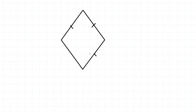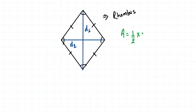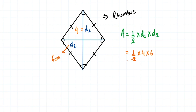Now, what if the four sides are equal but the angles are not 90 degrees? Then we call this quadrilateral a rhombus. To find the area of a rhombus, we need both diagonals. Let's call them D1 and D2. The formula is 1/2 times D1 times D2. For example, if D1 is 4 centimeters and D2 is 6 centimeters, the area is 1/2 times 4 times 6, giving us 12 centimeters squared.